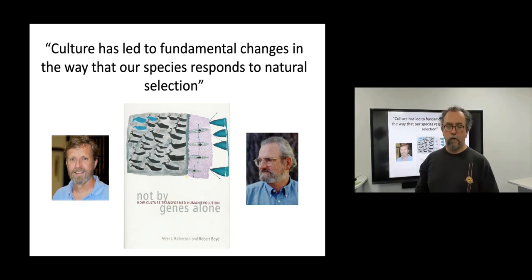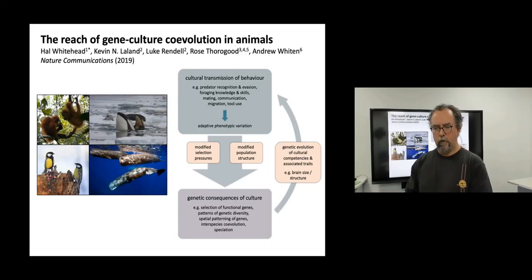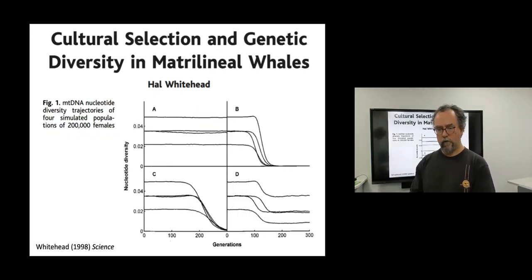One of the interesting things about culture in cetaceans is that we think that it is stable enough and persistent enough, especially in these group type situations, that it can actually get us into the territory where we can start thinking about gene culture co-evolution. So in their book, not by genes alone, Richardson and Boyd stated that culture has led to fundamental changes in the way that our species responds to natural selection. But we argue that this is also going on in cetacean populations. We put this evidence along with evidence for similar processes in other animal species into a recent review. One example that's been around for quite a while is how Whitehead's cultural selection and genetic diversity or his cultural hitchhiking hypothesis, which I believe he will discuss in his lecture.